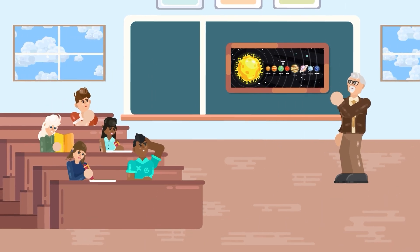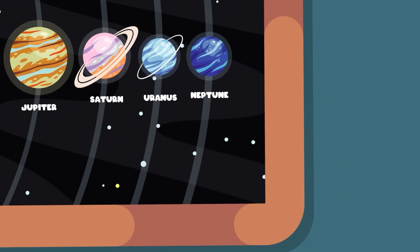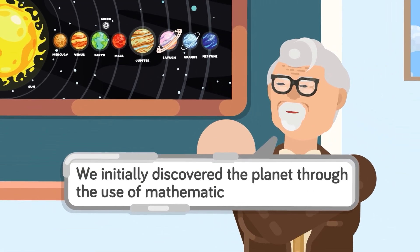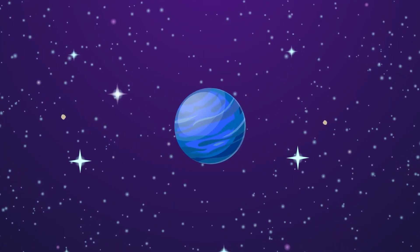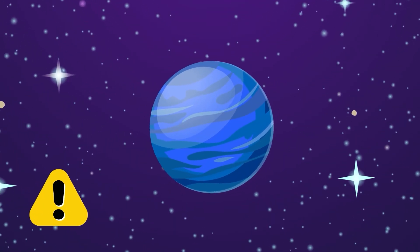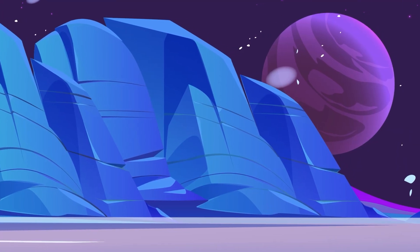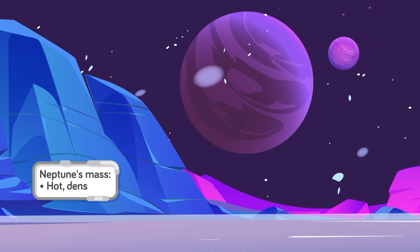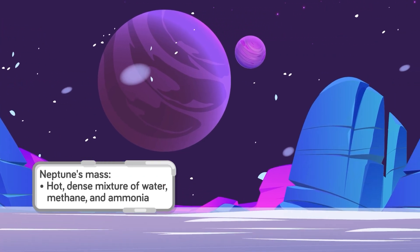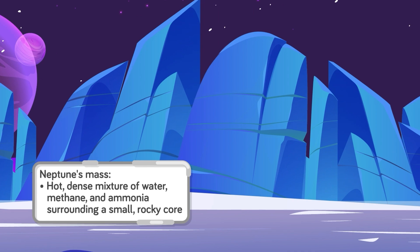It's so far away that Neptune is the only planet in our solar system that isn't visible to the naked eye from Earth, and as such we initially discovered the planet through the use of mathematical calculations. Much of the planet is covered by ice and rocks, although it doesn't have a solid surface to speak of, with most of the planet's mass being made up of a hot, dense mixture of water, methane, and ammonia surrounding a small rocky core.